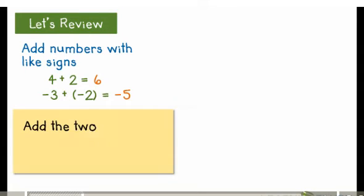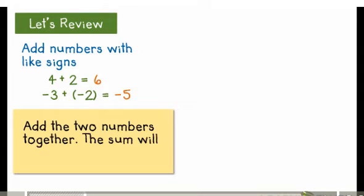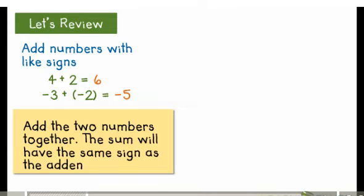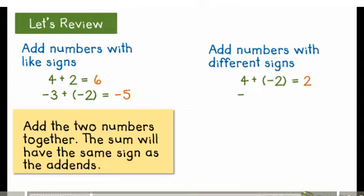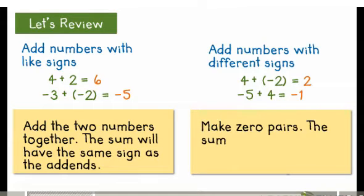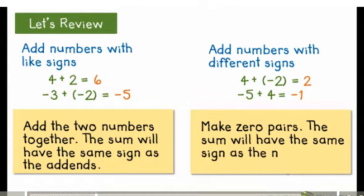Let's review the rules for adding integers. When we add numbers with like signs, we add the two numbers together. The sum will have the same sign as the addends. When we add numbers with different signs, we make zero pairs. The sum will have the same sign as the number with more chips.